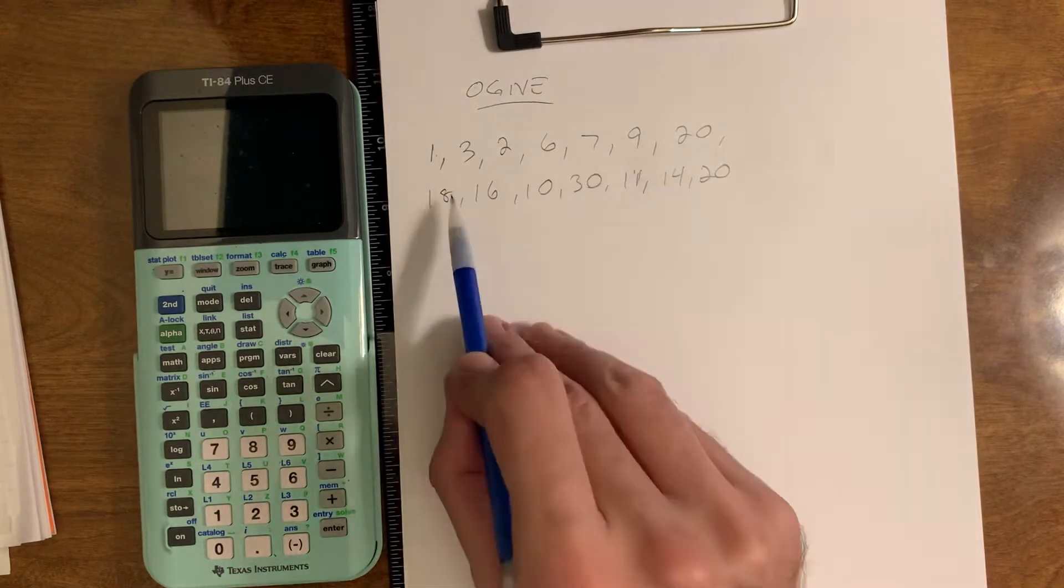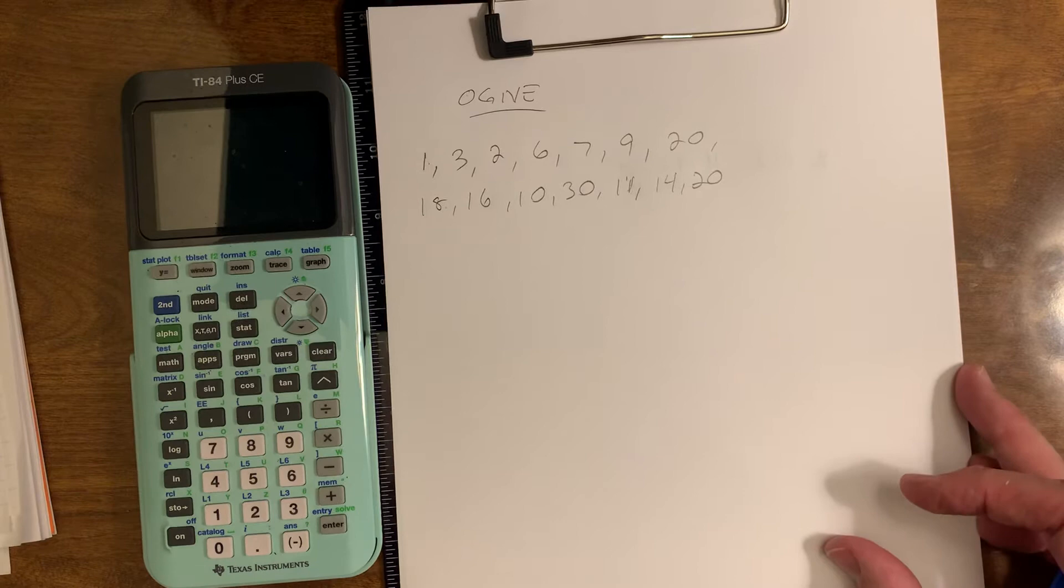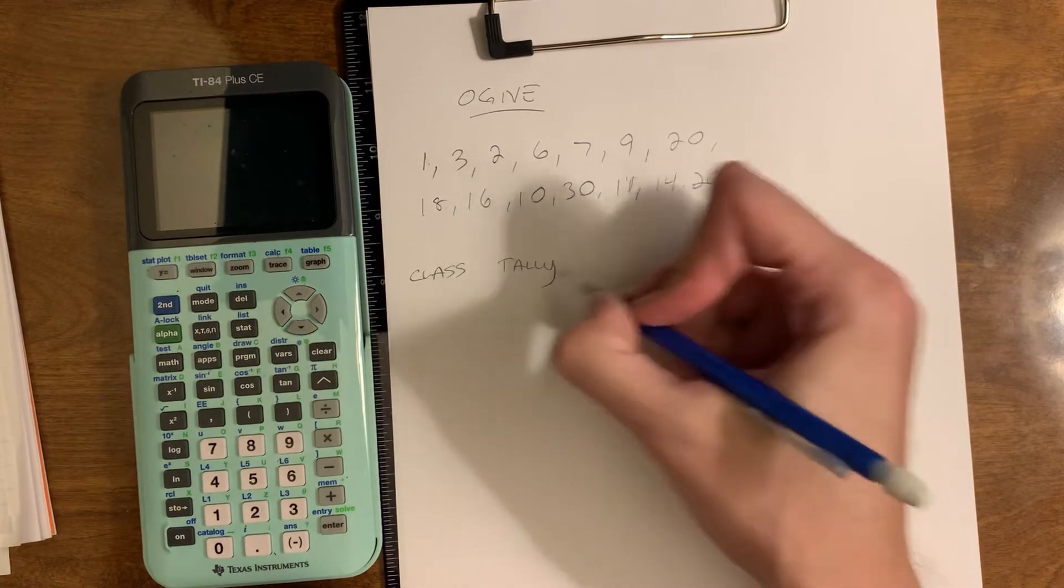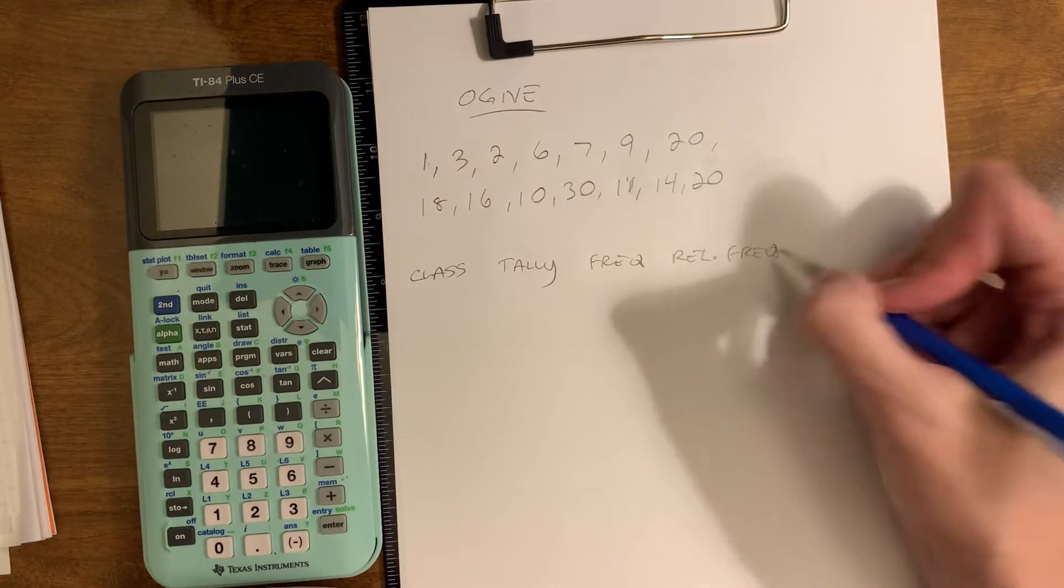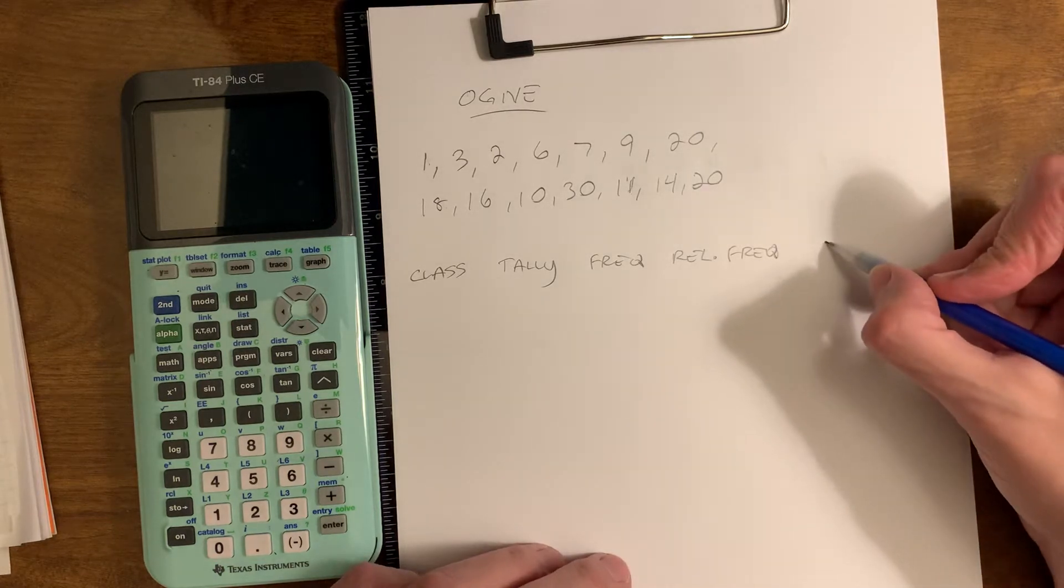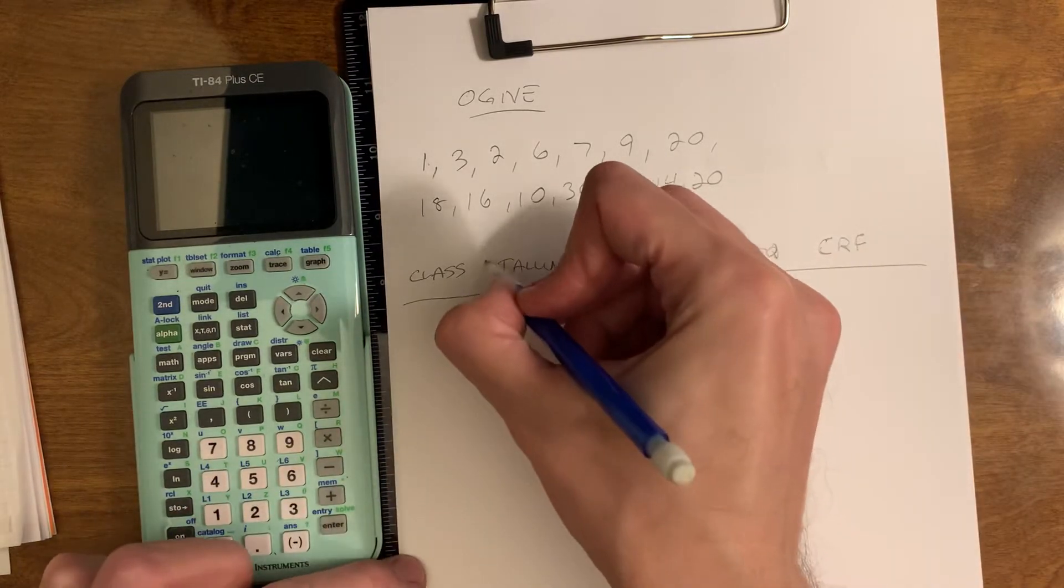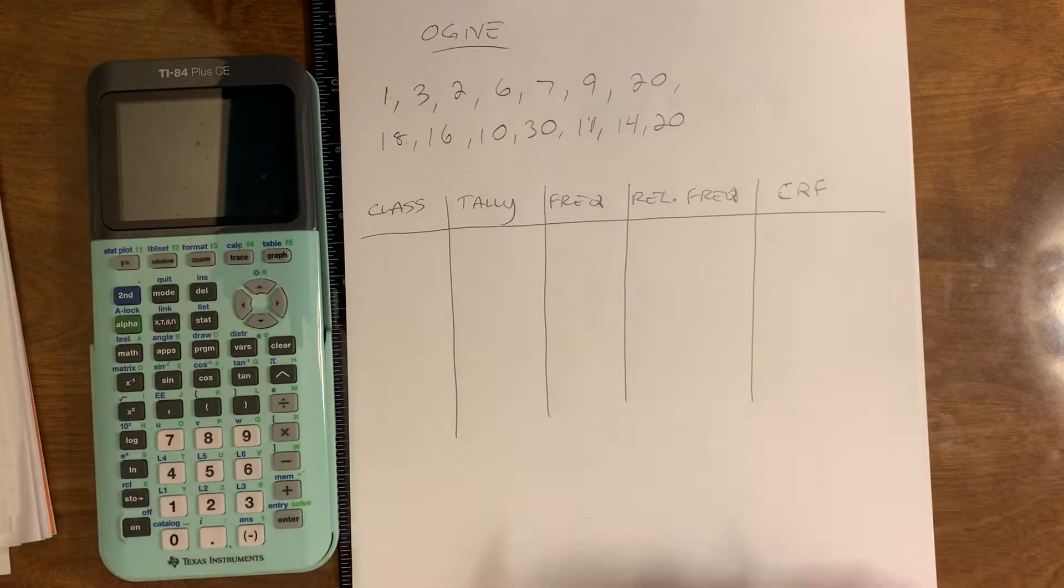Okay, these are our data points. We have 14 points of data. And the task is going to be very similar to building a histogram, so we're also going to need to make our frequency distribution table. That has the words class and then tally and then frequency and then relative frequency. We're going to add one more column this time and it's going to be cumulative relative frequency, abbreviated CRF.